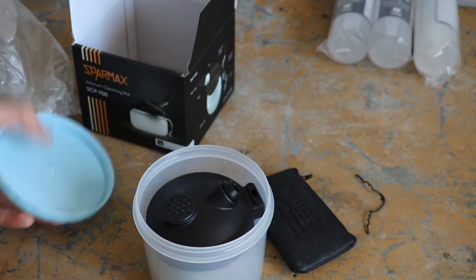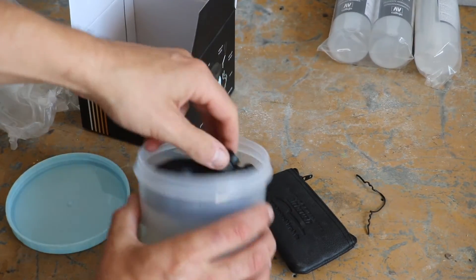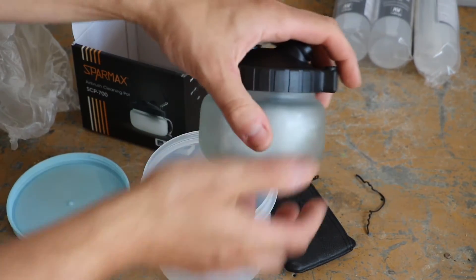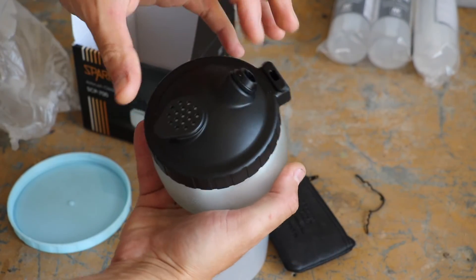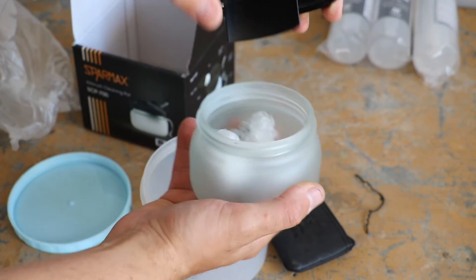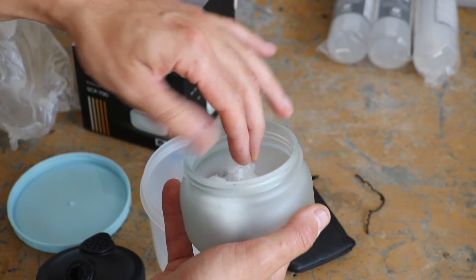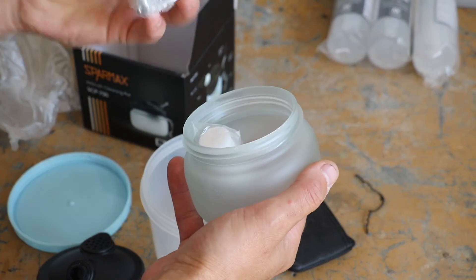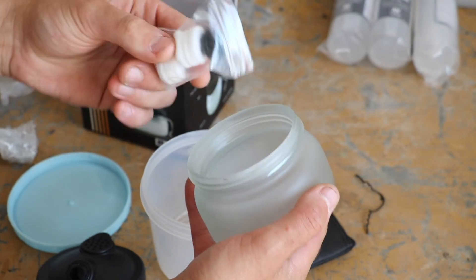So if you have a look in here what you've got is you've got a glass container into which you can spray to empty and to clean out your airbrush.